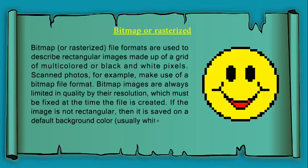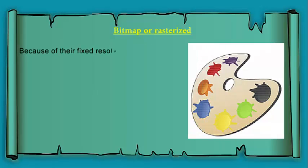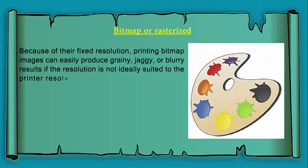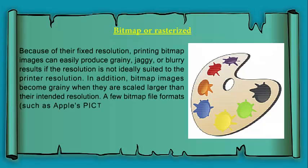If the image is not rectangular, then it is saved on a default background color, usually white, defined by the smallest bounding rectangle in which the image fits. Because of their fixed resolution, printing bitmap images can easily produce grainy, jaggy, or blurry results if the resolution is not ideally suited to the printed resolution. In addition, bitmap images become grainy when they are scaled larger than their intended resolution.